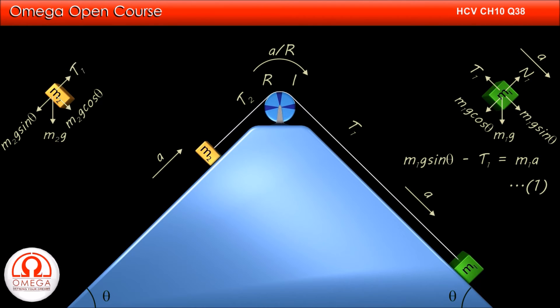Tension T2 is pulling the block up the incline and normal contact force from the incline acts perpendicular to the surface. The block is moving up along the incline with acceleration A. Writing the equation of motion along the incline, we get T2 minus M2g sin theta is equal to M2a.